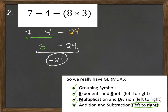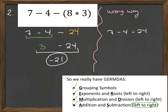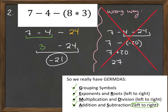I want to show the wrong way on this one too. If I had seven minus four minus 24 and I did four minus 24 first — four minus 24 is negative 20 — then I would have seven minus negative 20, or seven plus 20, which is 27. Notice that is not the correct answer. Be careful and watch your order of operations.